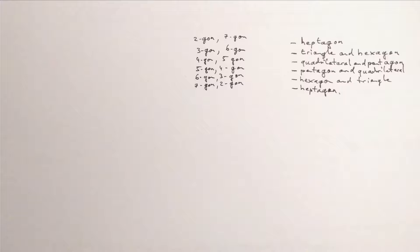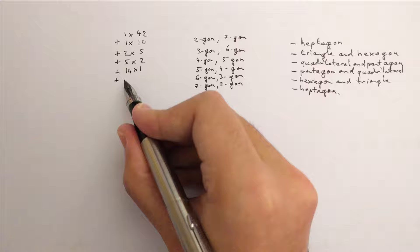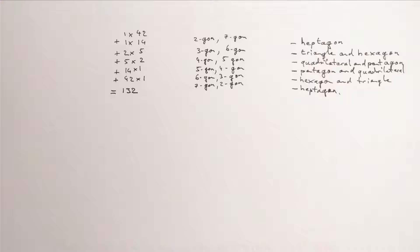Now, we can use the numbers of ways to cut those smaller polygons to get the number of ways to cut the octagon. One hundred and thirty-two. It's a good thing we didn't have to actually cut all of that.